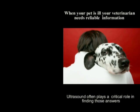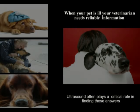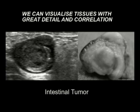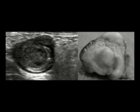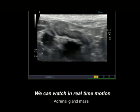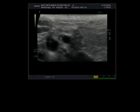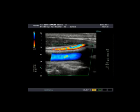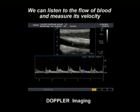When your pet is ill, your veterinarian really needs reliable information, and this is where ultrasound plays such a critical role. With ultrasound we get very high resolution images of your pet's different organs. We can look at organs or tissues in real-time motion, look at blood flow, and even measure the flow and velocities within vessels — which is really critical in heart studies.